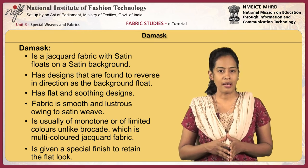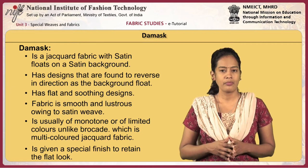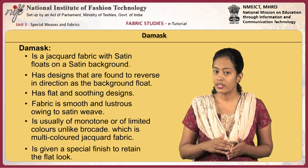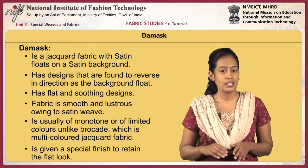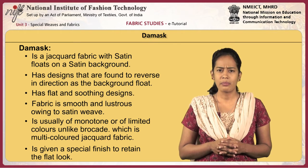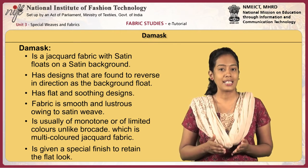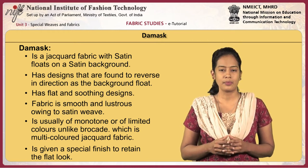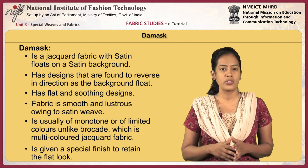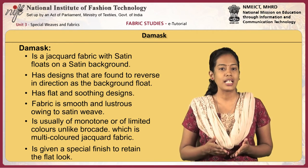Damask is a jacquard fabric with satin floats on a satin background. It has designs that are found in reverse direction as a background float. It has flat and smooth designs. The fabric is smooth and lustrous owing to satin weave. It is usually of monotone or of limited colors, unlike brocade which is multicolored. The damask fabric is given a special finish to retain the flat look.